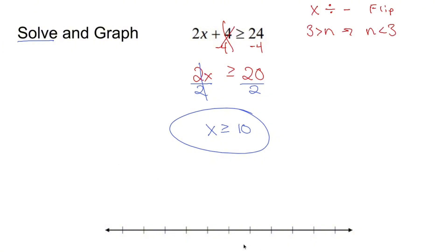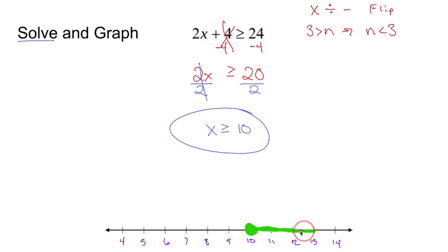Now I have to graph. Make sure you put 10 somewhere on the number line and put the rest in place. To graph x is greater than or equal to 10, put a circle at 10 and fill it in — because it's equal to 10. All my answers are going to be bigger than 10, like 11, 12.5, and a billion. That green shading means I can pick any number in that region — 10, 12 and a half — plug it in, and 2 times 12.5 plus 4 will be greater than or equal to 24. Any number there makes it a true statement.